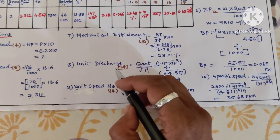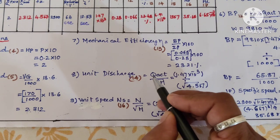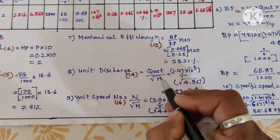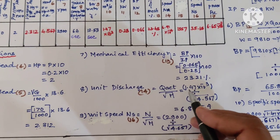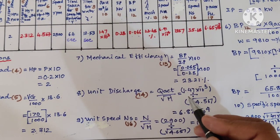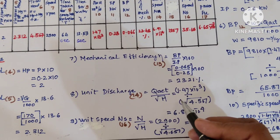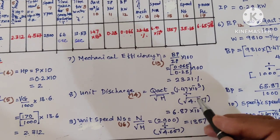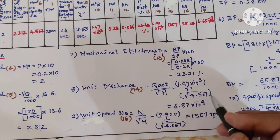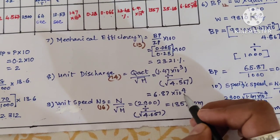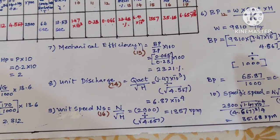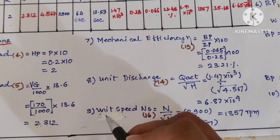Next, unit discharge: Q actual / √H. Q actual is 1.47 × 10^-3 divided by √4.567. The answer is 6.87 × 10^-4.